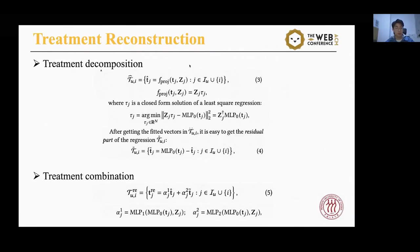It is easy to get the residual part of the regression, that is, treatment T_UI minus T-hat_UI, as shown in equation 4. The fitted vectors T-hat_UI and the residual T-tilde_UI can be recombined, achieving a reconstructed treatment shown in equation 5. The weights of combination are estimated by two MLPs, where the inputs of the two MLPs are concatenations of the transformed T_J and Z_J corresponding to item J.